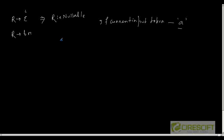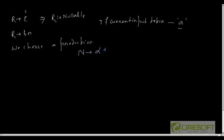We need to decide that if a given non-terminal is nullable, then whether to choose that nullable production based on some criteria. So let me write it down in a formal way. We choose a production N → alpha on input symbol c — meaning my next input symbol is c and I am choosing the production N → alpha — if certain conditions hold.